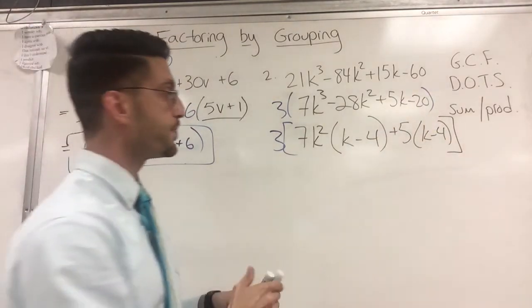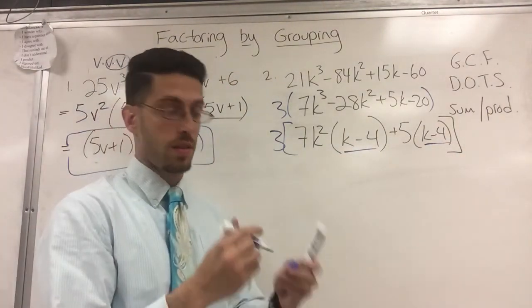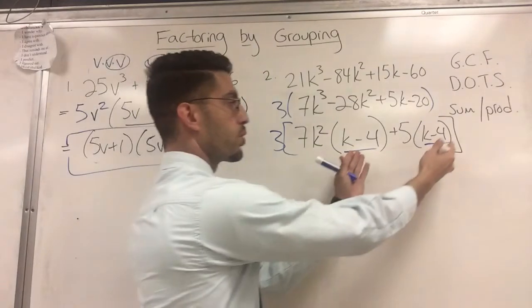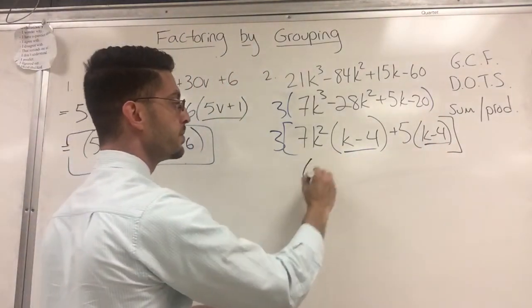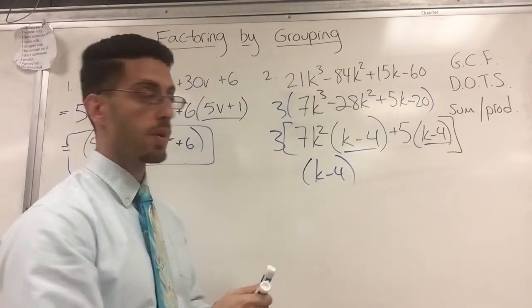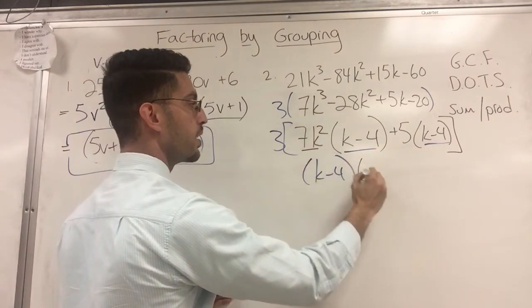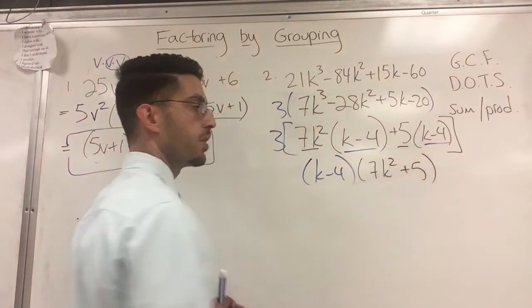Now, lucky for us, this is common in both. That's the point of this thing. So I'm going to factor out this K minus 4. Put it in front. And then whatever's left over goes in the next binomial. So this 7K² and plus 5.